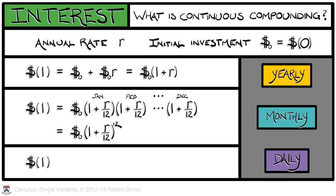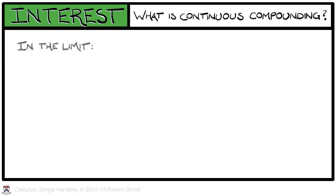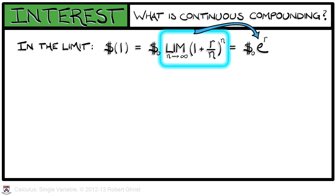Now, of course, monthly compounding is maybe not so accurate because they have different days per month. So we could do it daily and get the initial investment times quantity one plus r over three hundred and sixty-five to the three hundred and sixty-fifth power. I think you can see where this is going. If we take the limit, then after one year, we get the initial investment times the limit as n goes to infinity of quantity one plus r over n to the nth power. Now, I know you've seen that limit before. You may recall that it is, in fact, e to the r.